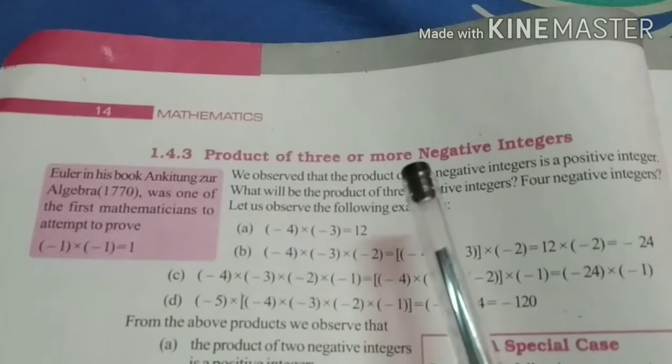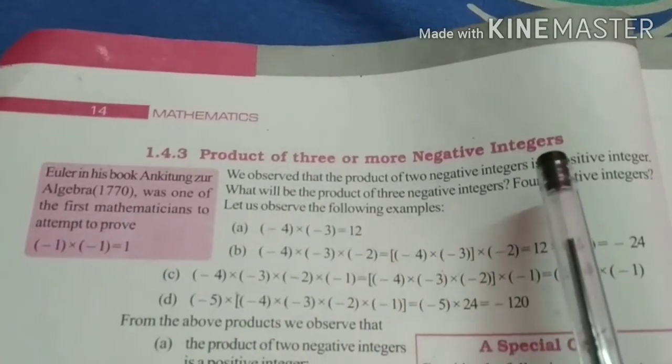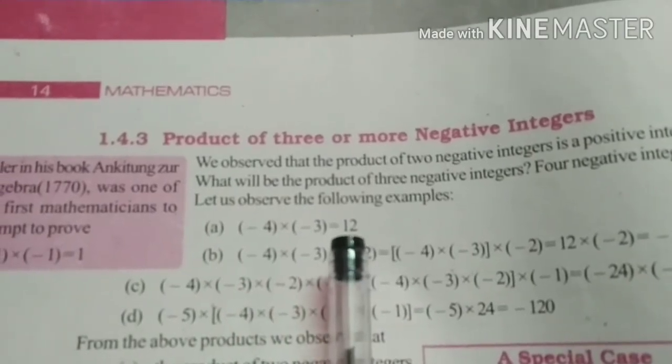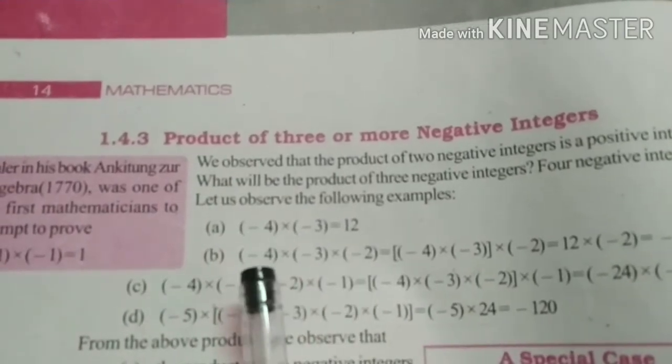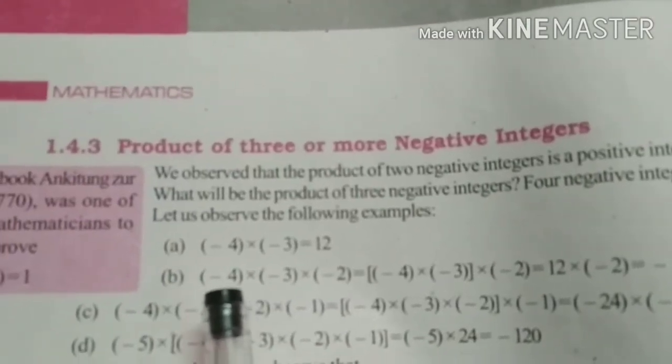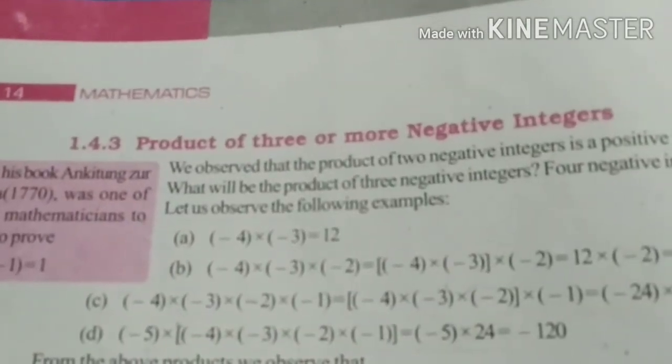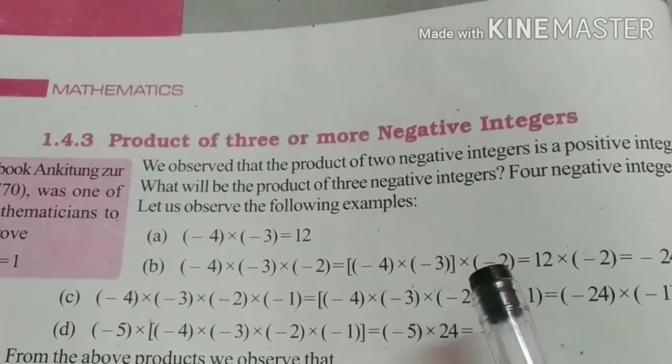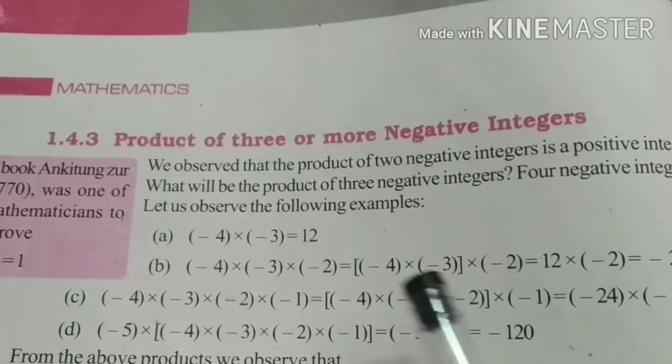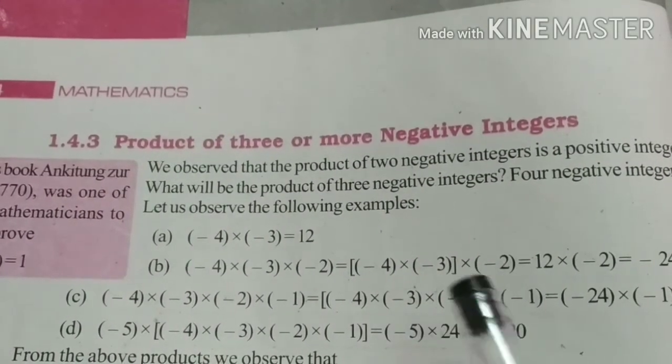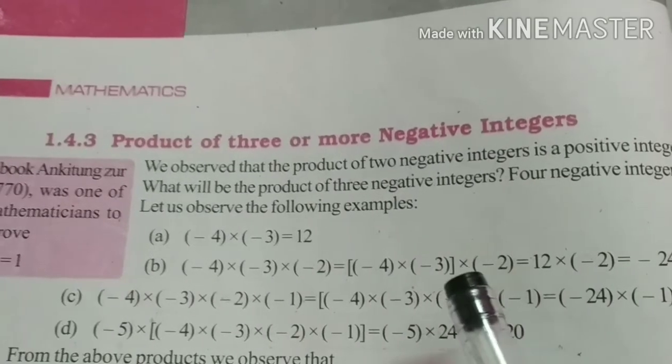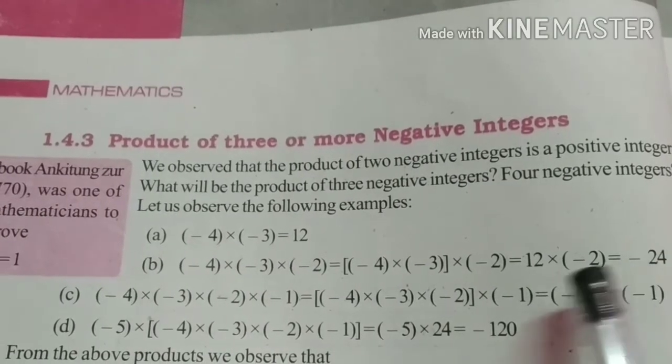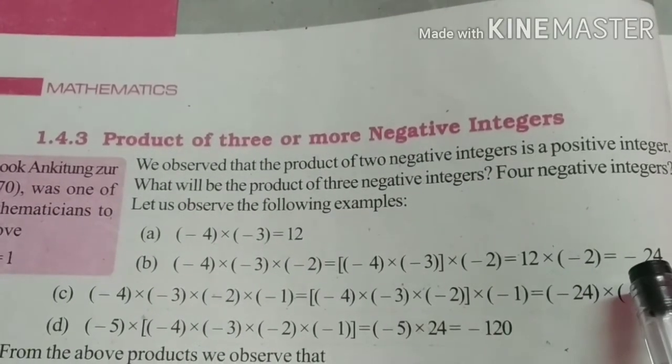Product of three or more negative integers. If there are two negative integers, we get positive integer in the answer. Next minus 4 into minus 3 into minus 2. So three negative integers are there. Here minus minus plus. So 4 into 3 we get 12 into minus 2. So we get minus 24. So we get negative integer in the answer.